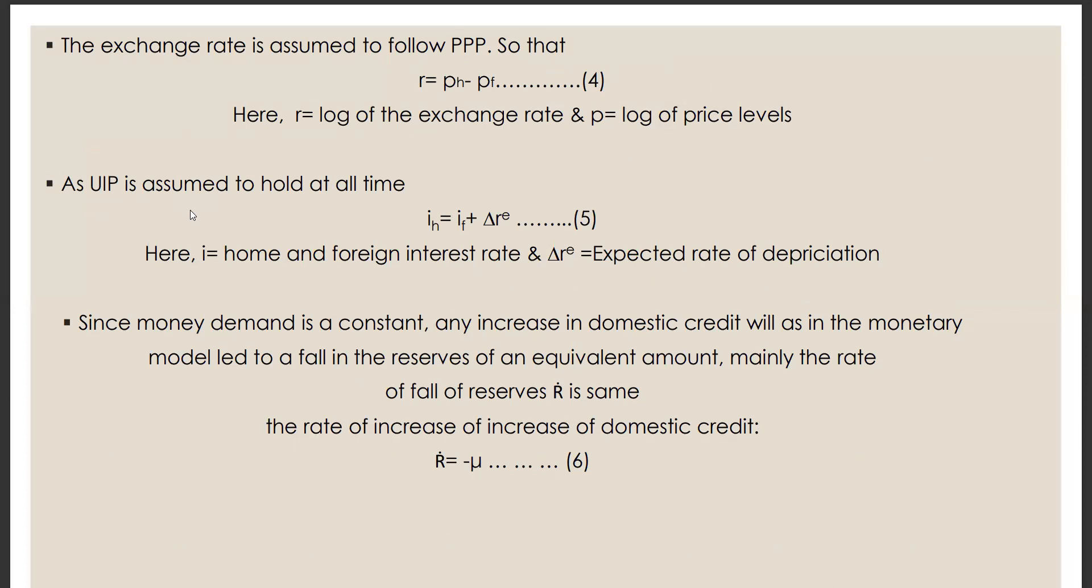Here we also assume that the exchange rate follows PPP so that R is equal PH minus PF, where R is equal to log of the exchange rate and P is equal to log of price levels. UIP is assumed to hold at all time, so we can write it as IH is equal to IF plus DLRE, where IH is equal to home and foreign interest rate and DLRE is equal to the expected rate of depreciation.